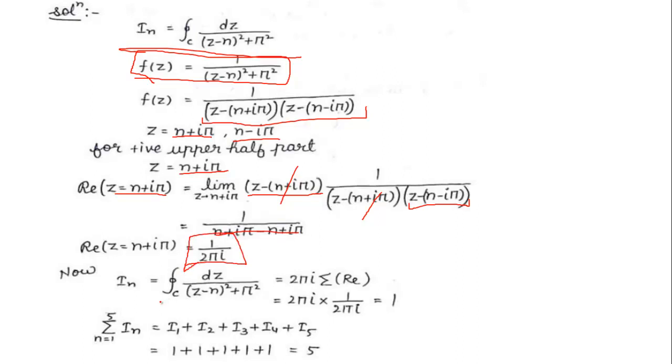When we do the integral, we use the theorem: 2πi times the summation over the residue values. So the value of the residue here is 1/(2πi). 2πi times 2πi cancels and we get 1.